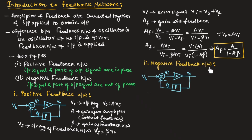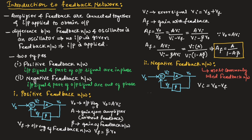Now let us understand the negative feedback network. The circuit for both positive and negative feedback networks is the same, except that there is a negative sign in the feedback loop for the negative feedback network. This negative feedback network is the most commonly used feedback network. For a negative feedback network, VI is equal to VS minus VF. Therefore, VS equals VI plus VF.